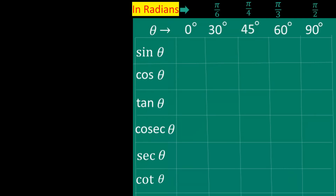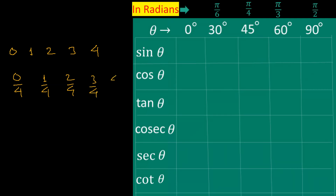And 90° is equal to pi by 2 radian. First, we write down numbers from 0 to 4 in order: 0, 1, 2, 3, 4. Now we divide all these numbers by 4: 0 by 4, 1 by 4, 2 by 4, 3 by 4, and 4 by 4. Now we simplify this: 0, 1 by 4, half, 3 by 4, and 1.